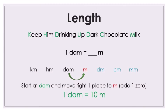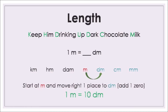One decametre is how many metres? Go to decametre, move one place to the right, add one zero, multiply by 10. One decametre is 10 metres. One metre is how many decimetres? Move one place to the right, add one zero, multiply by 10, or move the point one place to the right. One metre is 10 decimetres.